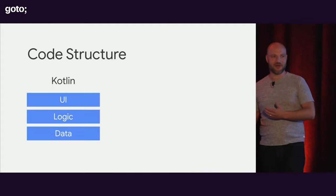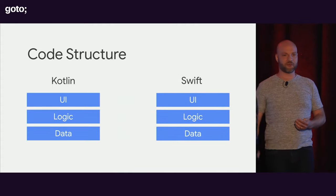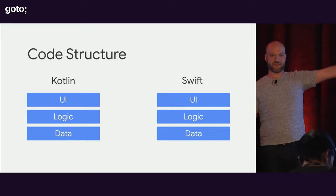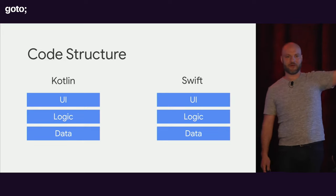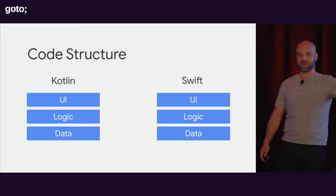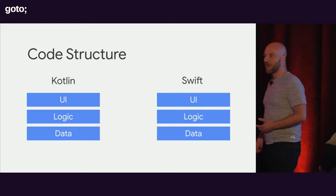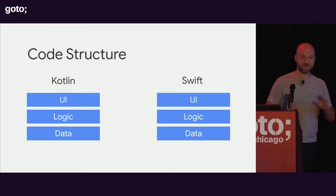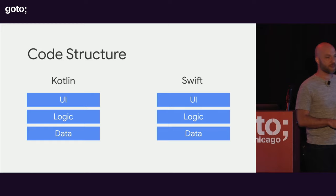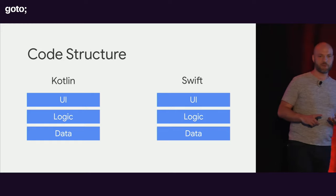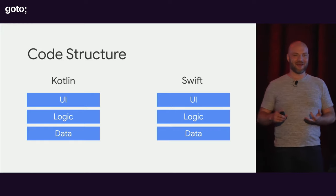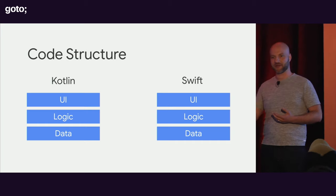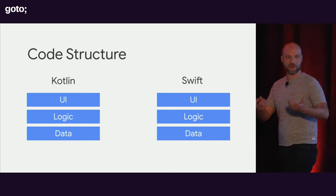Simultaneously, you have another team that makes your Swift application for iOS, and they make the exact same three boxes with different names attached to them and different acronyms. They make a very similar but slightly different UI, they perform hopefully the same logic, sometimes different logic, and they typically interact with the exact same data, especially if you have a back-end system that they're both talking to.